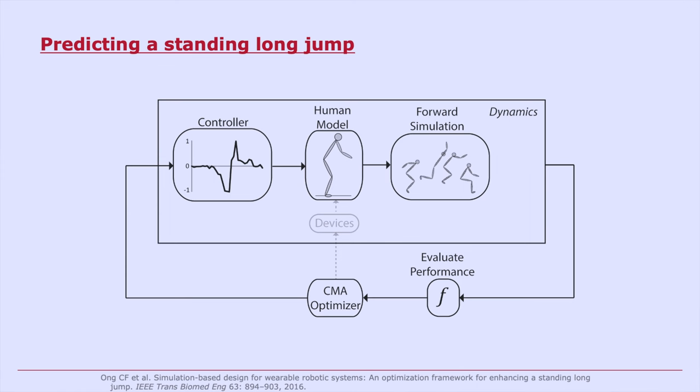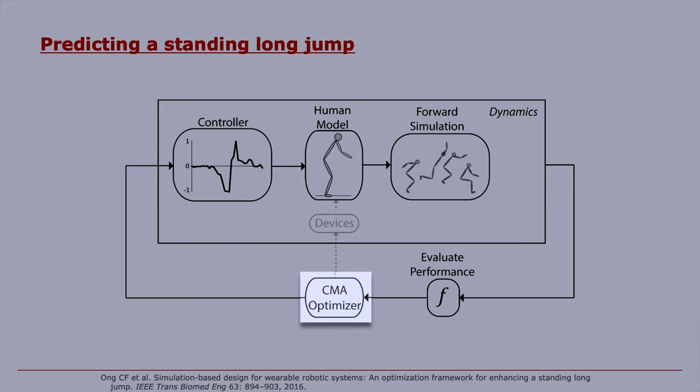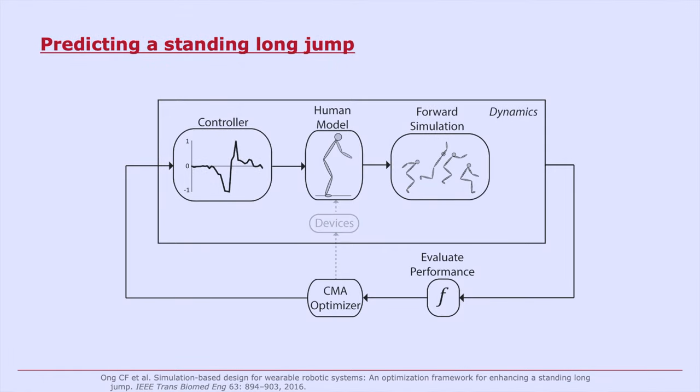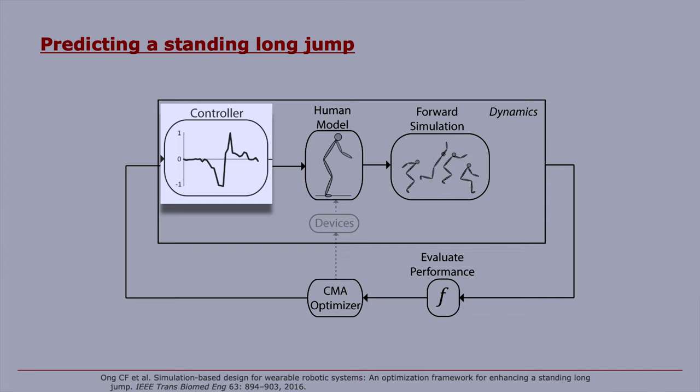And then he asks an optimizer, in this case, a covariance matrix adaptation optimizer, what should the control parameters be, or what should the control signal be for each of the motors in this model? So these control signals might be between negative one and one. You might think of them as the torques generated by the motors over time.